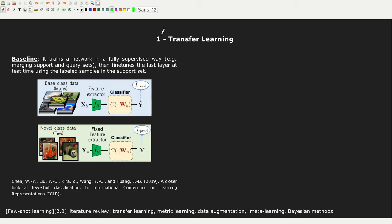Let's start with the first branch: Transfer Learning. It's often considered a baseline, and I suggest you give a look at this article here. The authors show that a very simple approach based on transfer learning — like the one I'm going to show you now — is still very effective and can be better than many other fancy methods.